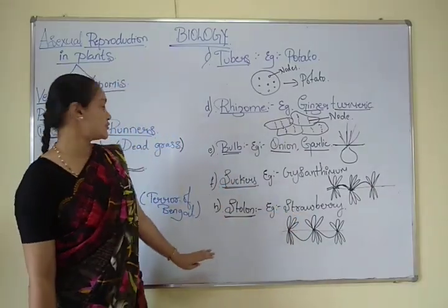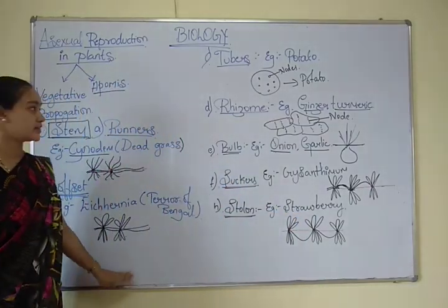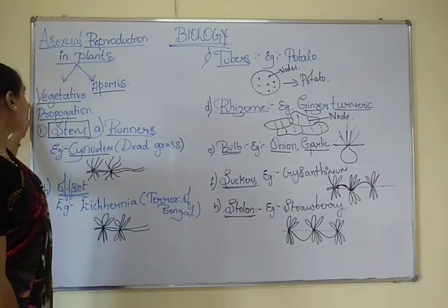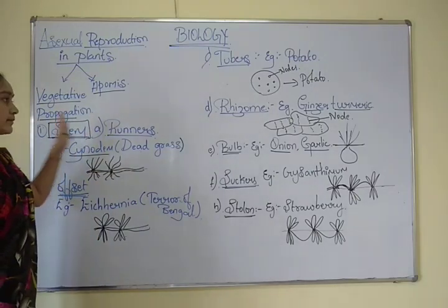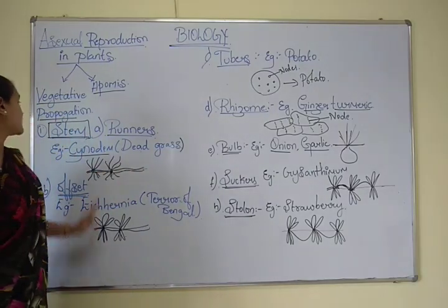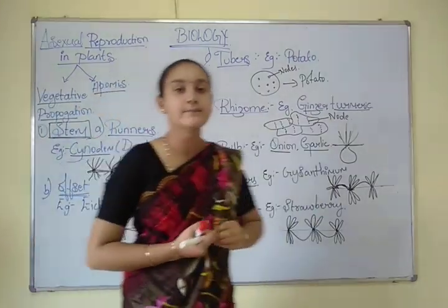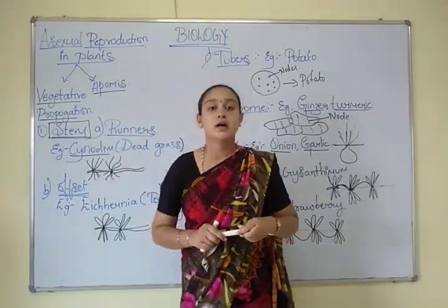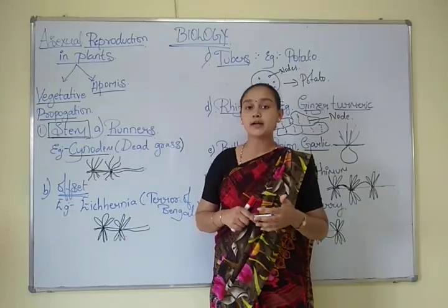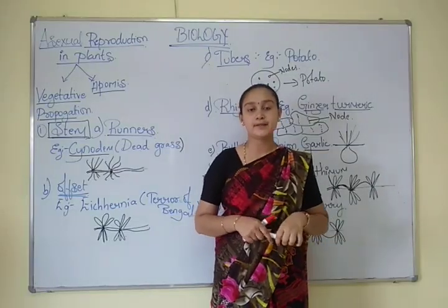These are the different types of asexual reproduction in the stem. In the next class, we shall study about the vegetative parts of roots and leaves with examples. Thank you.